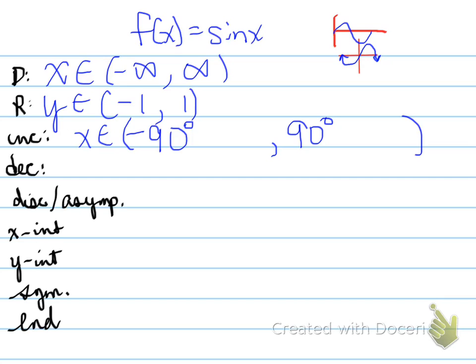It's increasing from negative 90 degrees up to positive 90 degrees. This repeats every 360 degrees n. It ends at 90 degrees plus 360n. Don't forget that n belongs to the integers.